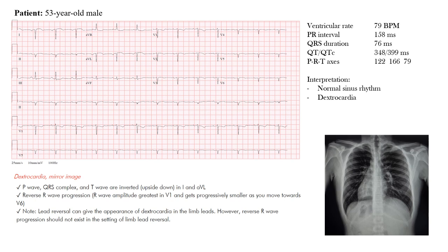Here we have a 53-year-old male coming in with this EKG, otherwise asymptomatic. This is showing dextrocardia, which is a rare congenital anomaly in which the heart is actually on the right side of the chest instead of the left. Looking at this chest X-ray, the heart is normally on the left side, but in this case it's over on the right — that's dextrocardia.